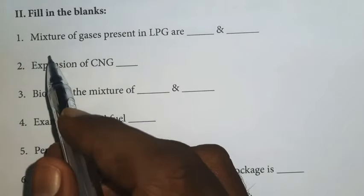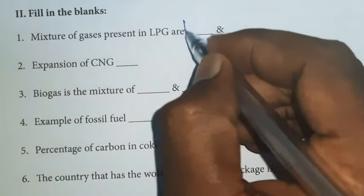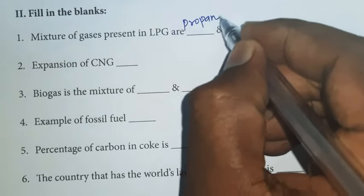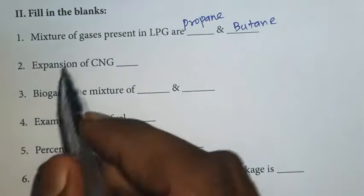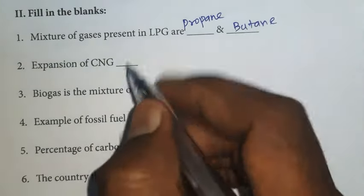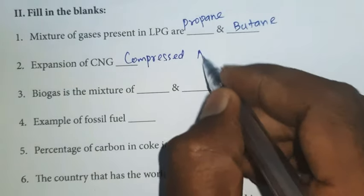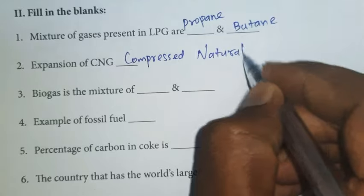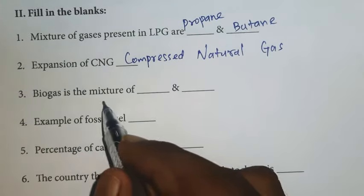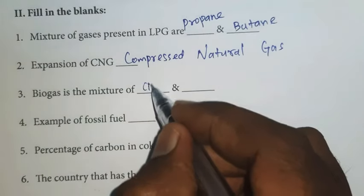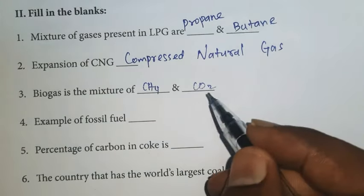First one: the mixture of gases present in LPG are propane and butane. Second one: expansion of CNG — compressed natural gas. Third one: biogas is a mixture of methane and carbon dioxide, that is CH4 and CO2.